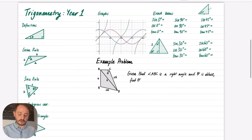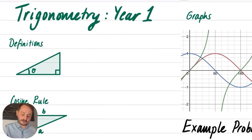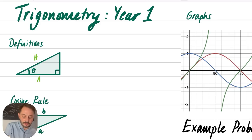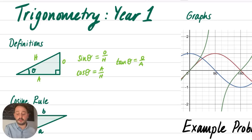We're starting with page one, which covers trigonometry from year one. From the triangle: the hypotenuse is the longest side, the adjacent is next to the angle, and the opposite is across from the angle. From GCSE you should know: sine of the angle equals opposite divided by hypotenuse, cosine equals adjacent divided by hypotenuse, and tan equals opposite divided by adjacent. These definitions are used throughout the whole topic so make sure you know all of them.